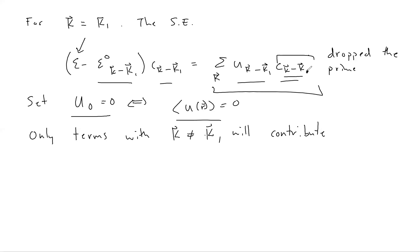When we allow coupling to the potential, we expect other coefficients such as C(k minus K2) or C(k minus K3) — where these are also reciprocal lattice vectors — to become nonzero but small, because this is weak coupling to a potential. The sum on the right-hand side is a sum of Fourier coefficients of the potential times the wave function coefficients C(k minus K), where K goes over all reciprocal lattice vectors.